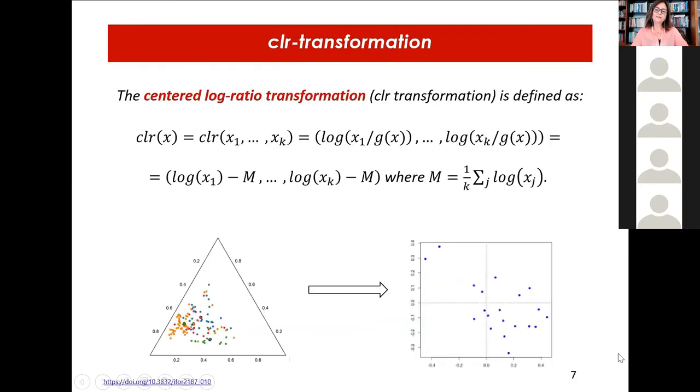Maybe the most straightforward option would be the center log ratio transformation, because as you know, this transformation, the CLR transformation, brings the data from the simplex to the real space. And then here, everything is fine. I think, or it's not, I think this is perhaps, I would say the most important misunderstanding on CODA. That when you have your data in the real space, then you can forget about the compositional problem. And as I will show, this is not the case for variable selection.